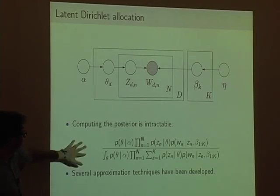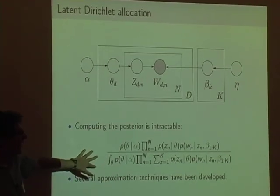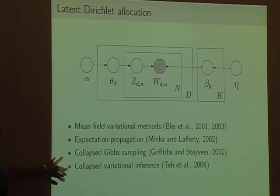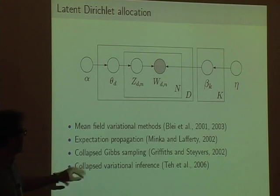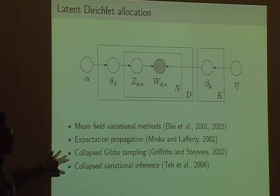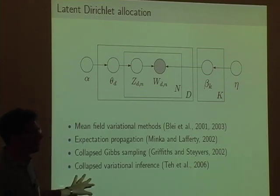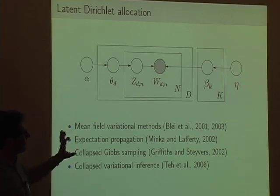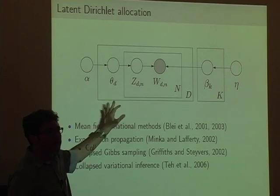The posterior distribution — the probability of theta and Z given everything else — is intractable to compute exactly. Several approximation techniques have been developed: mean field variational methods, which we'll use today, as well as expectation propagation, collapsed Gibbs sampling, and collapsed variational inference, which takes the best of both worlds and is very efficient. We can't really compute the hidden structure exactly, but we can approximate it.